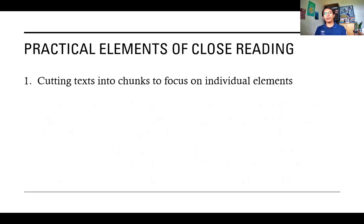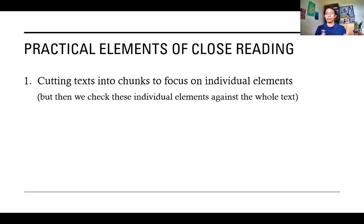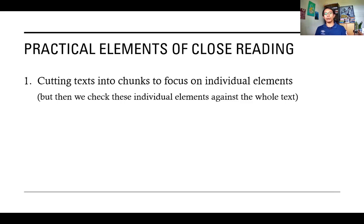These are actually common things, but you might not have realized they are part of close reading. The first one is we try to cut the text into chunks. If a short story has three paragraphs, you cut them into three parts so you can focus on each one. You chunk the text to make it easier to focus on each individual chunk. However, after you're done with each chunk, you will have to relate it back to the whole text to check your understanding. Literary works are not supposed to be chopped into pieces like cadavers.